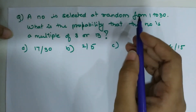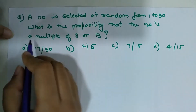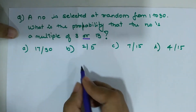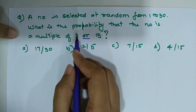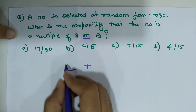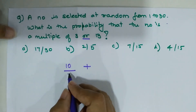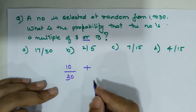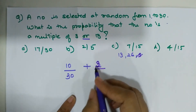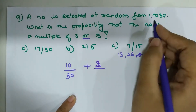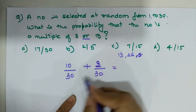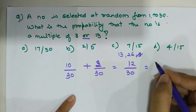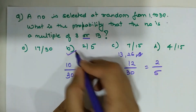Question 4: A number is selected at random from 1 to 30. What is the probability that the number is a multiple of 3 or 13? Whenever you have an 'or', you take the probability of each and add them. There are 10 multiples of 3 from 1 to 30, and 2 multiples of 13 in that range. Since the denominators are the same, we add directly: 10/30 + 2/30 = 12/30, which simplifies to 2/5.